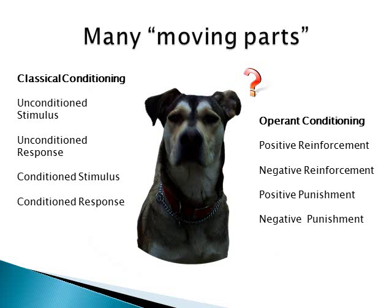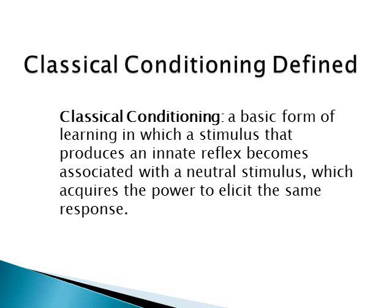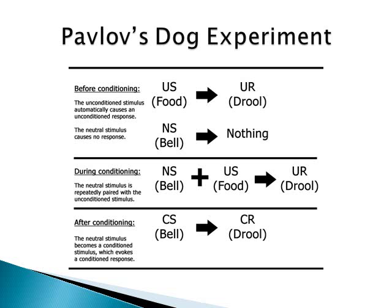First, I'll present a definition of classical conditioning. Next, I will review two early experiments: Pavlov's dog experiment and the Little Albert experiment. Finally, I will suggest a process you might use to determine whether a part of a classical conditioning example is the unconditioned stimulus, unconditioned response, conditioned stimulus, or conditioned response. Classical conditioning is a basic form of learning in which a stimulus that produces an innate response becomes associated with a neutral stimulus, which acquires the power to elicit the same response.